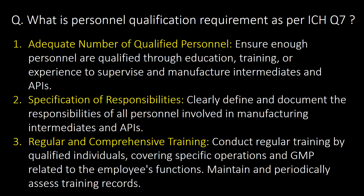What is the personal qualification requirement as per ICH Q7 guideline? Three important personal qualification requirements as per ICH Q7 are: first, adequate number of qualified personnel; second, specification of responsibilities; and third, regular and comprehensive training.